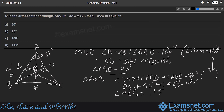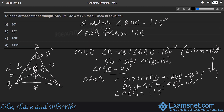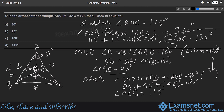Similarly, angle AOC = 115°. Adding the three angles around O: angle AOB + angle AOC + angle BOC = 360°. So 115° + 115° + angle BOC = 360°, giving angle BOC = 360° − 230° = 130°. The right answer is option C.